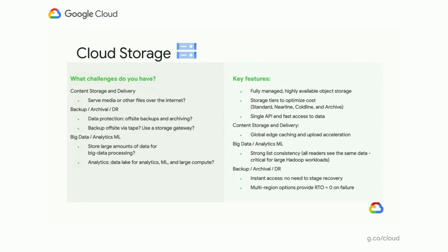For backup, DR, and archival, across all our storage classes you get instant access to the data — no need to stage access to recovery or deal with complicated workflows to get access to your data. We also have products in the multi-regional category — dual-regional and multi-regional — which will store your data such that if a region goes down, you can immediately continue to read data from another copy in another region. This provides an RTO (recovery time objective) of zero on failure. If a region goes down, the dual-region is still available for reads, and your application can continue serving as though nothing has happened.